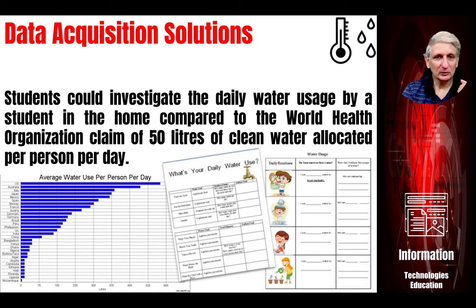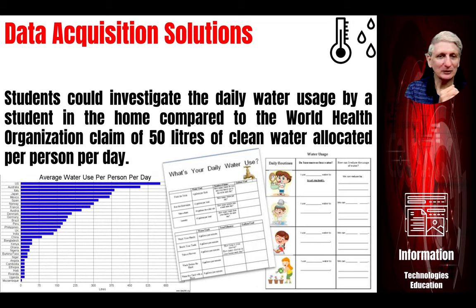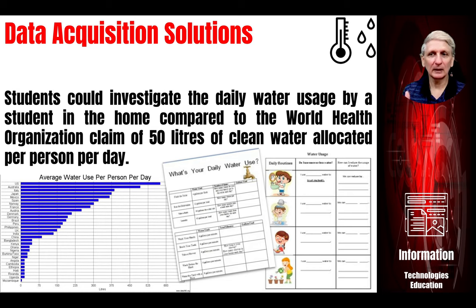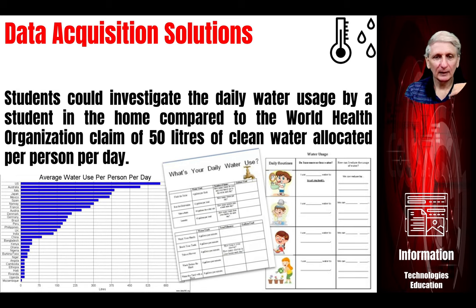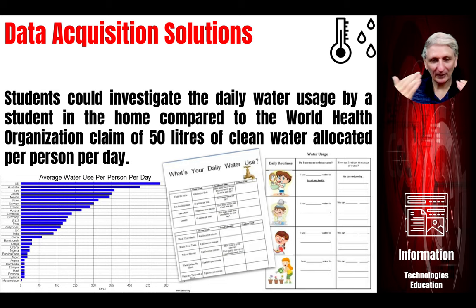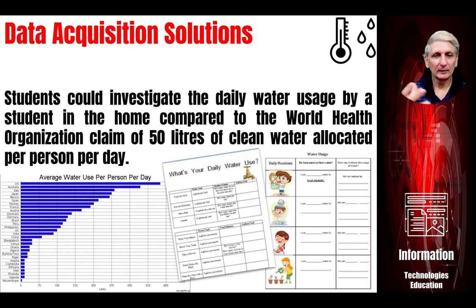Other suggestions include looking at water usage and comparing national and international averages with what students find their own water use involves — collecting data about water being used in their home, how long they leave the shower on, how long they run the dishwasher, how long they water the plants. They can also go to the water meter and record it, then after 24 hours record again to measure the amount of water used by their household.